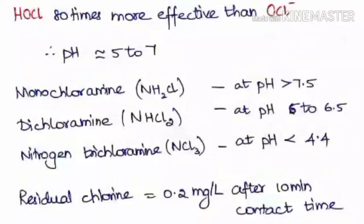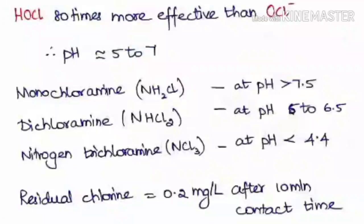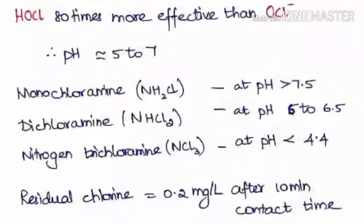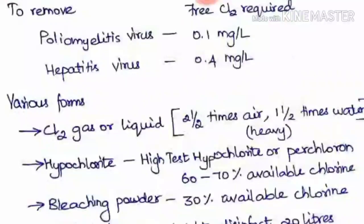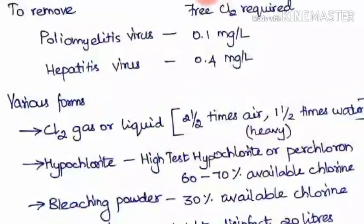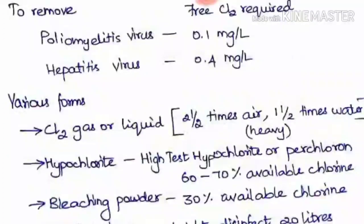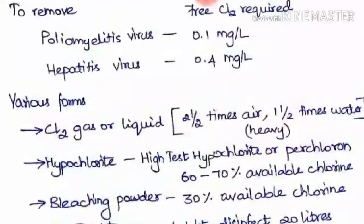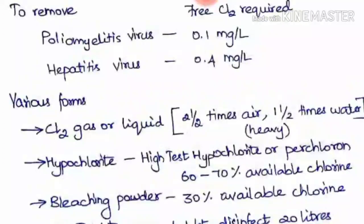Residual chlorine must be maintained in the water to take care of further contamination while passing through the distribution system. Nearly 0.2 mg/L after 10 minutes of contact time must be maintained. To remove specific viruses, for poliomyelitis virus the free chlorine required is 0.1 mg/L, and for hepatitis virus it is 0.4 mg/L.